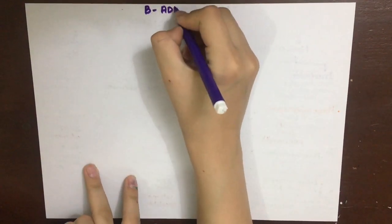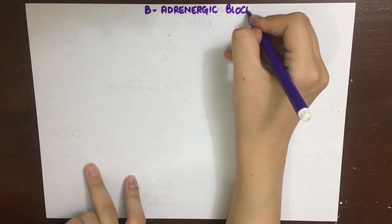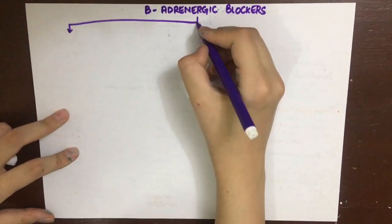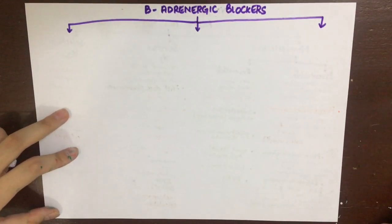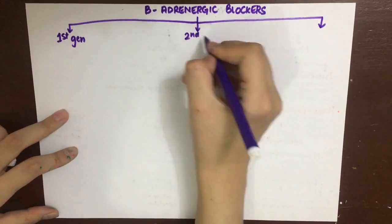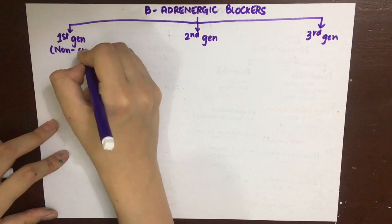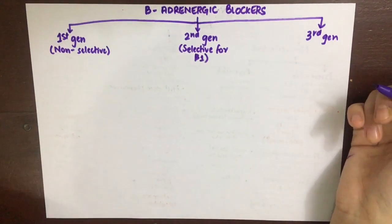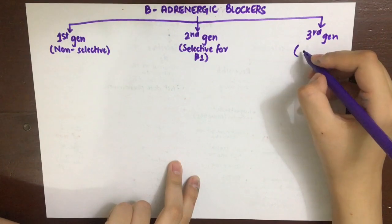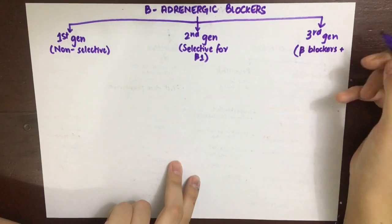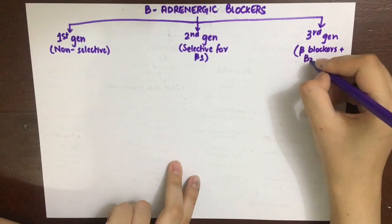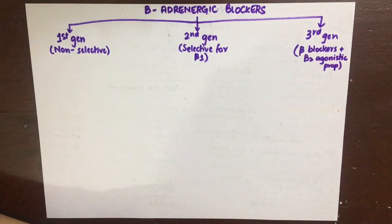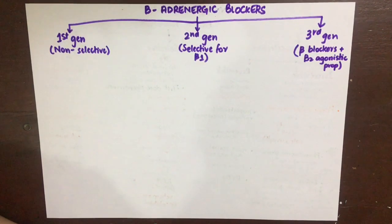Moving to beta adrenergic blockade, drugs mainly block the beta-1 receptor, which is predominant in the heart, kidneys, and aqueous humor of the eye. Beta-2 blockade is less desirable because it causes vasoconstriction, increased total peripheral resistance, bronchospasm in asthmatics, vasospasm in vasospastic disorders, and metabolic effects. Therefore, drugs are classified into non-selective (beta-1 and beta-2), selective beta-1, or beta blockers with beta-2 agonistic activity.